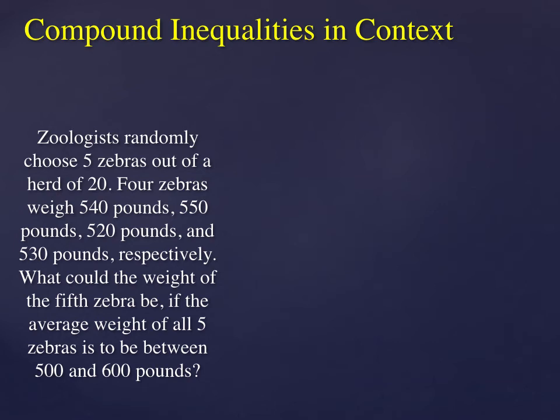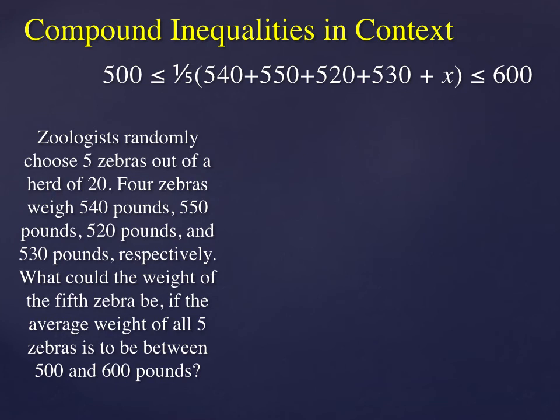Now we have a compound inequality in context. This is a word problem. Zoologists randomly choose 5 zebras out of a herd of 20. 4 zebras weigh 540 pounds, 550 pounds, 520 and 530 pounds respectively. What could be the weight of the fifth zebra if the average weight of all five zebras is to be between 500 and 600 pounds? So between means 500 will be the low end, 600 will be the high end. And we can set up a compound inequality that looks like this, where that algebraic expression in the middle is the average weight of the five zebras, where x is the weight of the fifth.